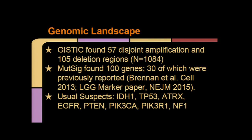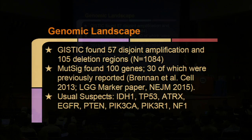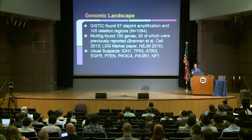The overall genomic landscape of this entire panglioma dataset shows that GISTIC identified 57 disjoint amplifications with 105 deleted regions — very large megabase regions across 1,000 glioma patients. MUTSIG identified 100 candidate genes profiled across three different centers, 30 of which were previously reported from the first GBM marker paper and the new marker paper. The usual suspects — IDH1, P53, ATRX, EGFR, PTEN, PIK3CA, PIK3R1, and NF1 — are all represented, with an additional set of 70 genes now being reported.